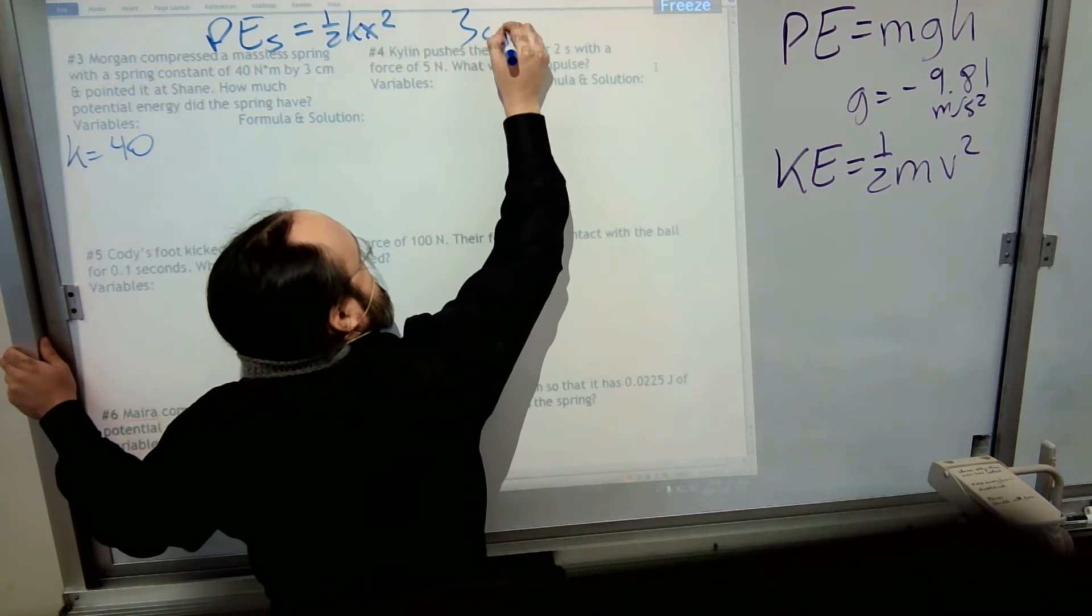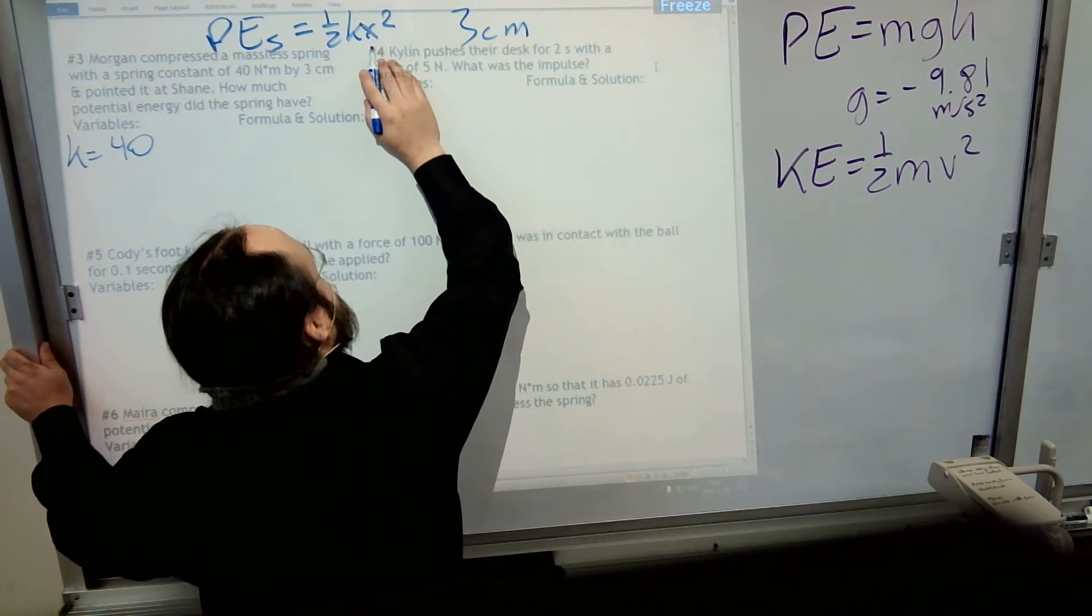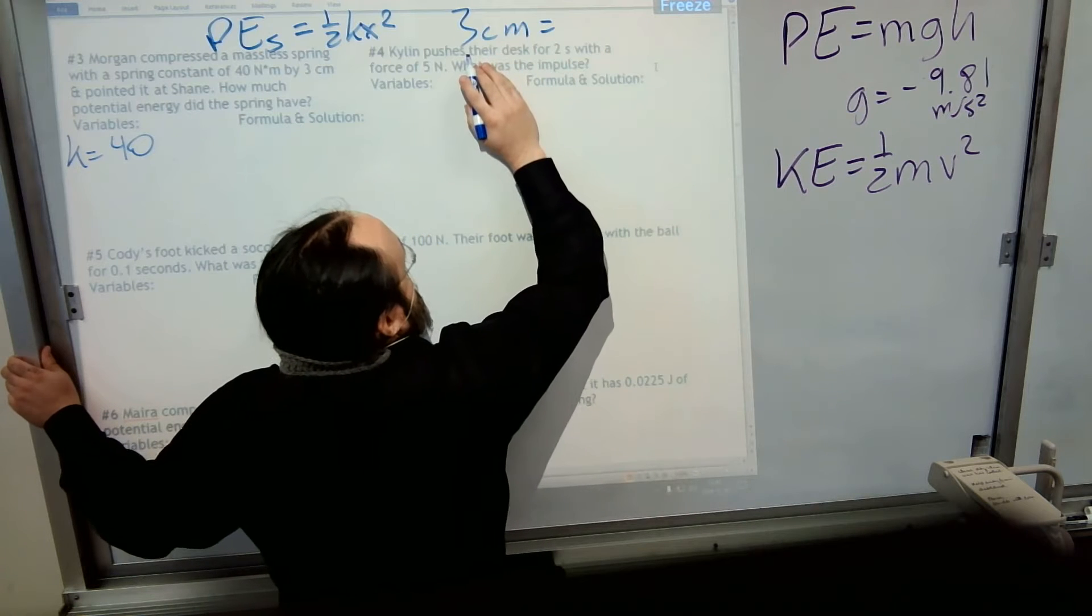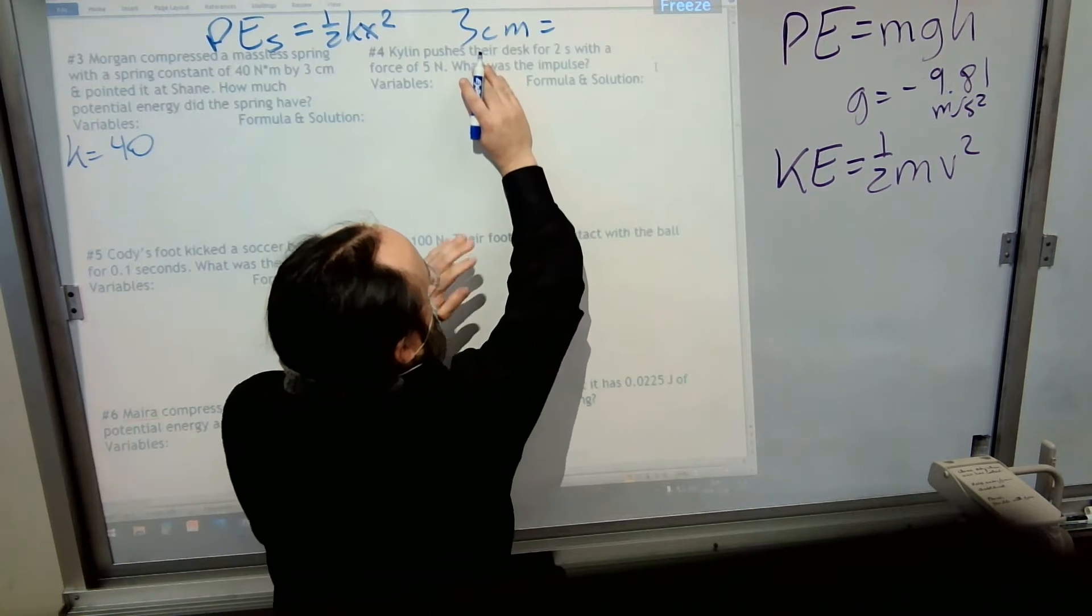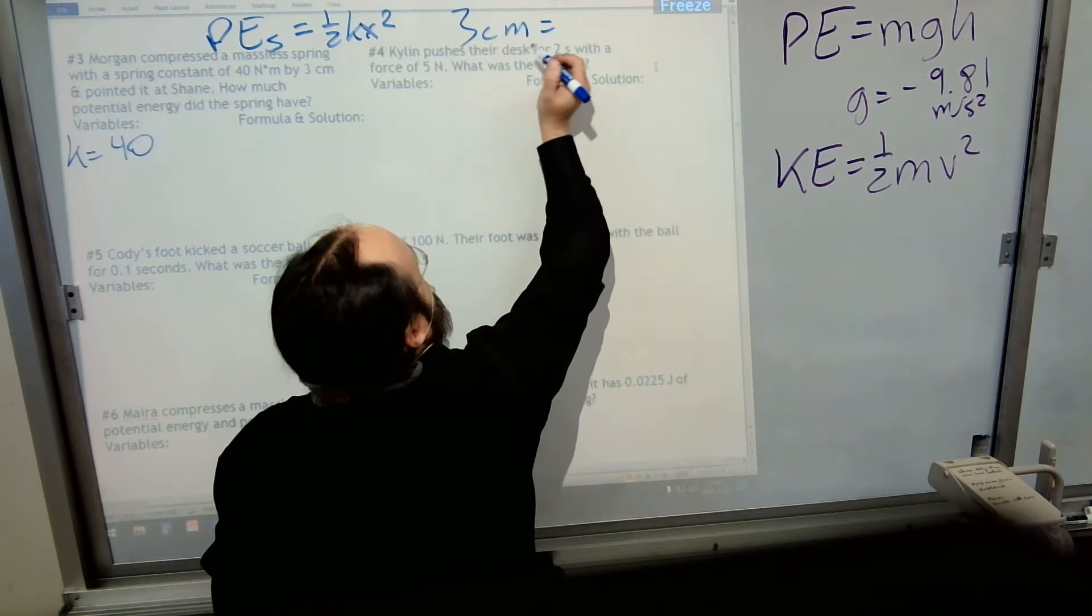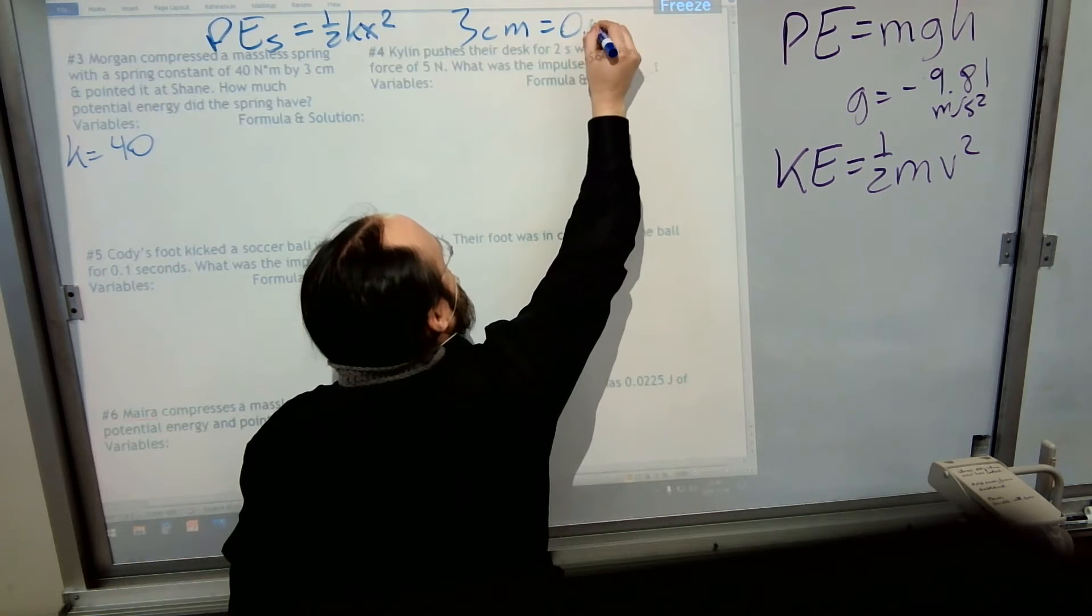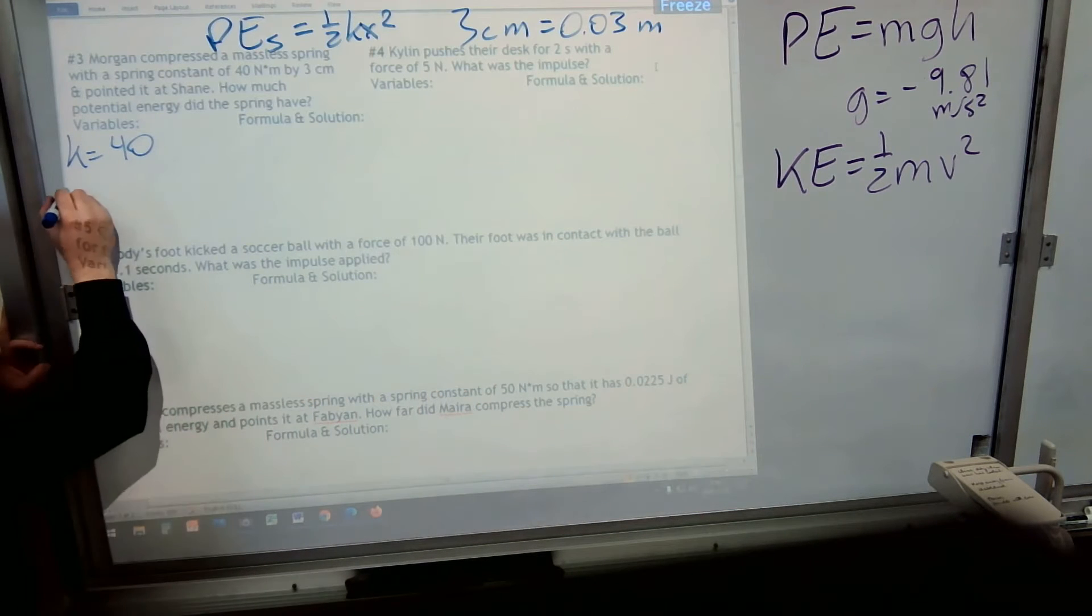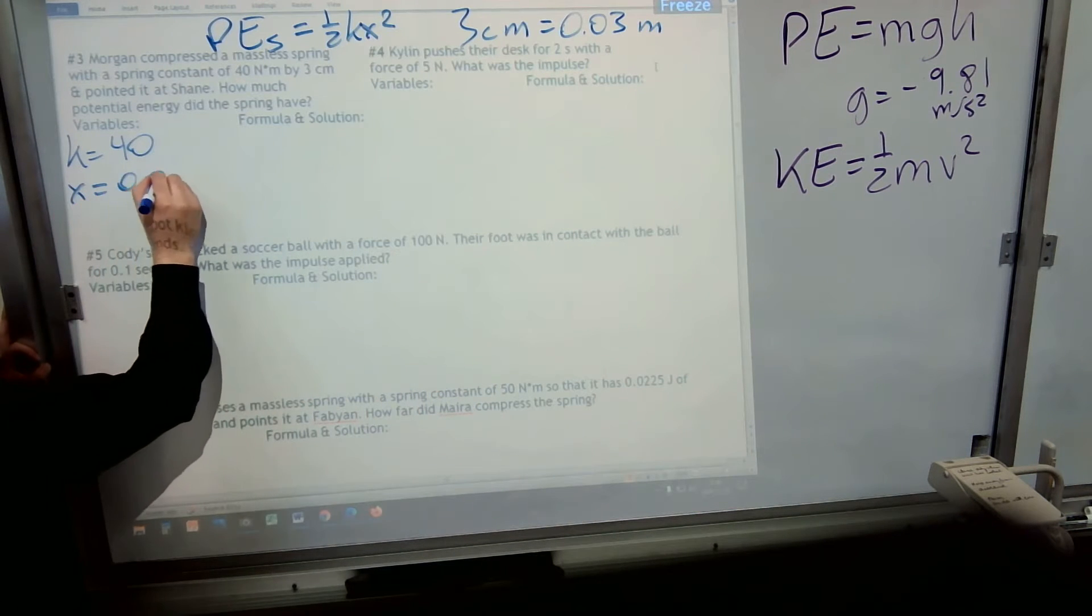Now, remember, if it says 3 centimeters, I told you that x is supposed to be in meters. So 3 centimeters, it's just like cents and a dollar. Centimeters, there's 100 centimeters in a meter. So that'd be 3 one-hundredths of a meter, or 0.03 meters. So that's what I'm going to write down for x, 0.03.